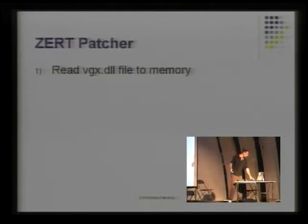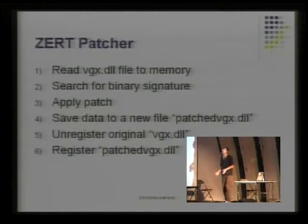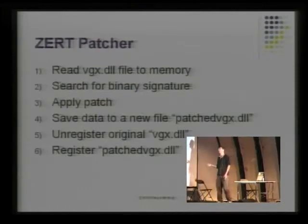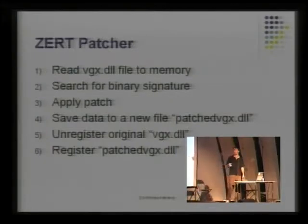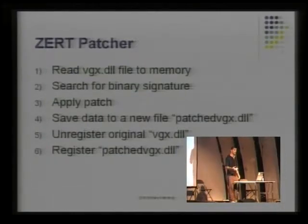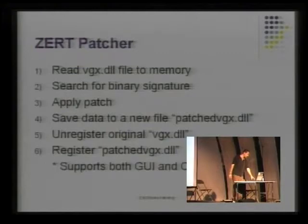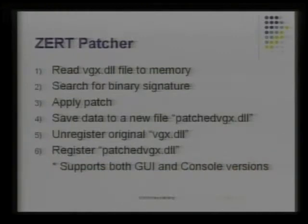About the Z-Patcher: we will see the few steps we do. The key thing here is to write the patch as simple as possible. The steps are: read the file, search for the binary signature, and then just replace. We have the signature of the old function and then replace the file with the corrected code. Save the data to a new file, then unregister the original file and register our new file. This is the indirect WFP bypass. Our patcher also supports both GUI and console for administrators to deploy it in their own networks.